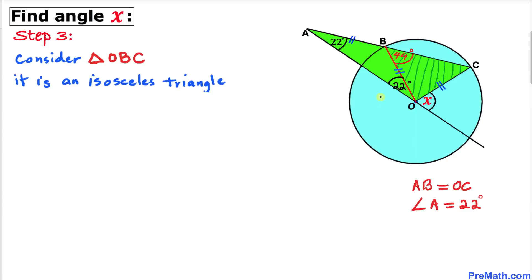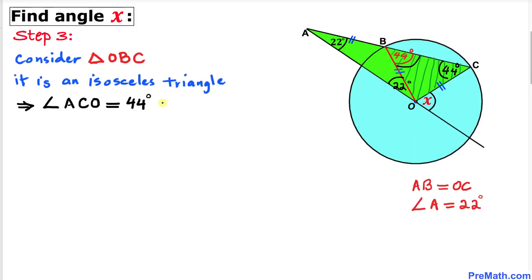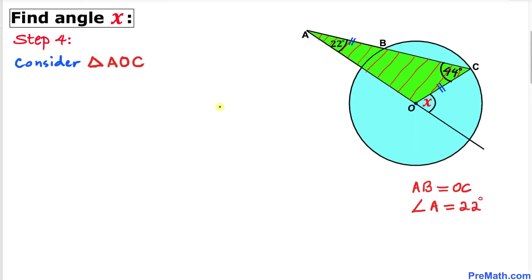In the next step, let's focus on triangle OBC. We can see this is an isosceles triangle since OB equals OC (both radii). Therefore, if angle OBC is 44 degrees, the base angle OCB must also be 44 degrees, so angle ACO turns out to be 44 degrees.